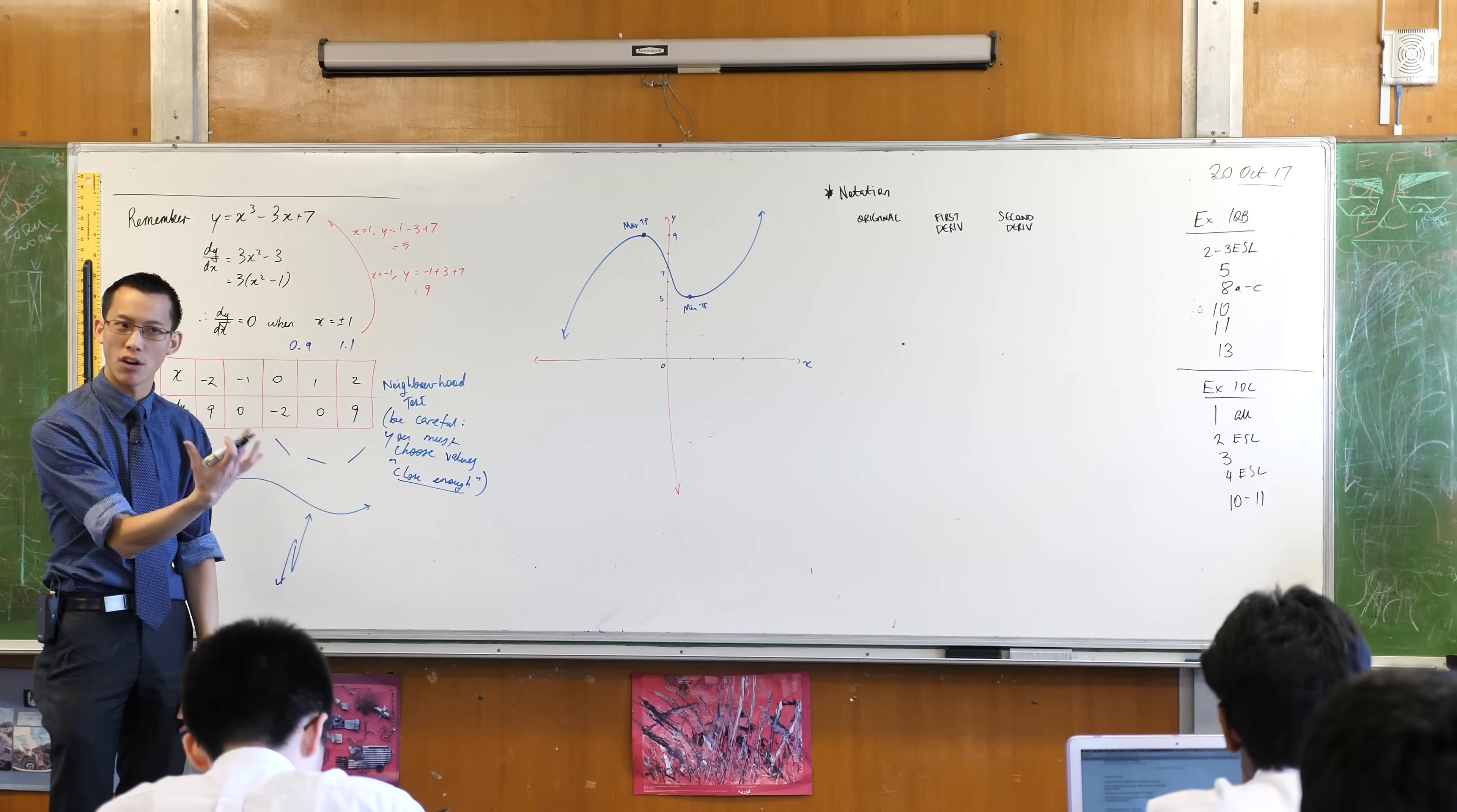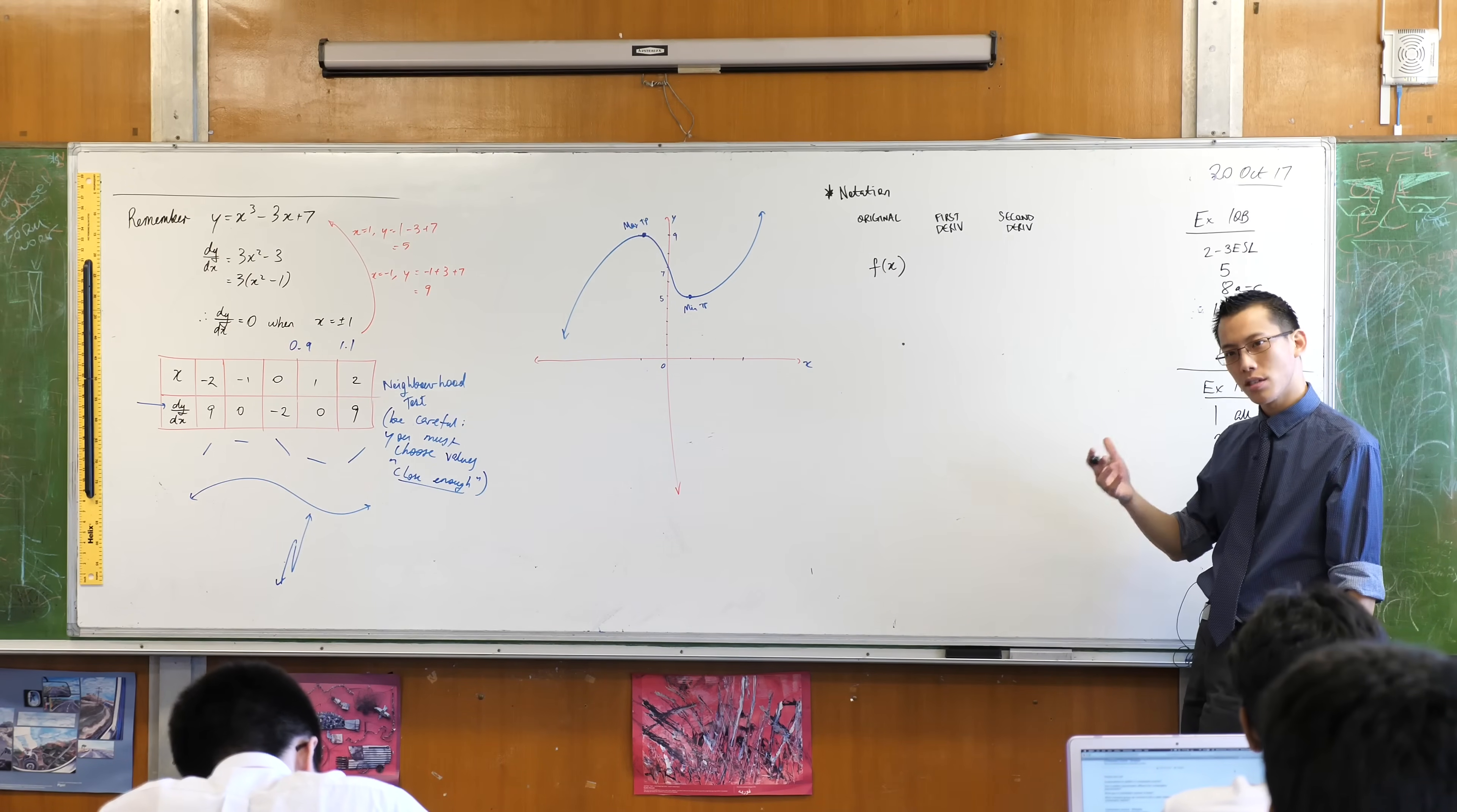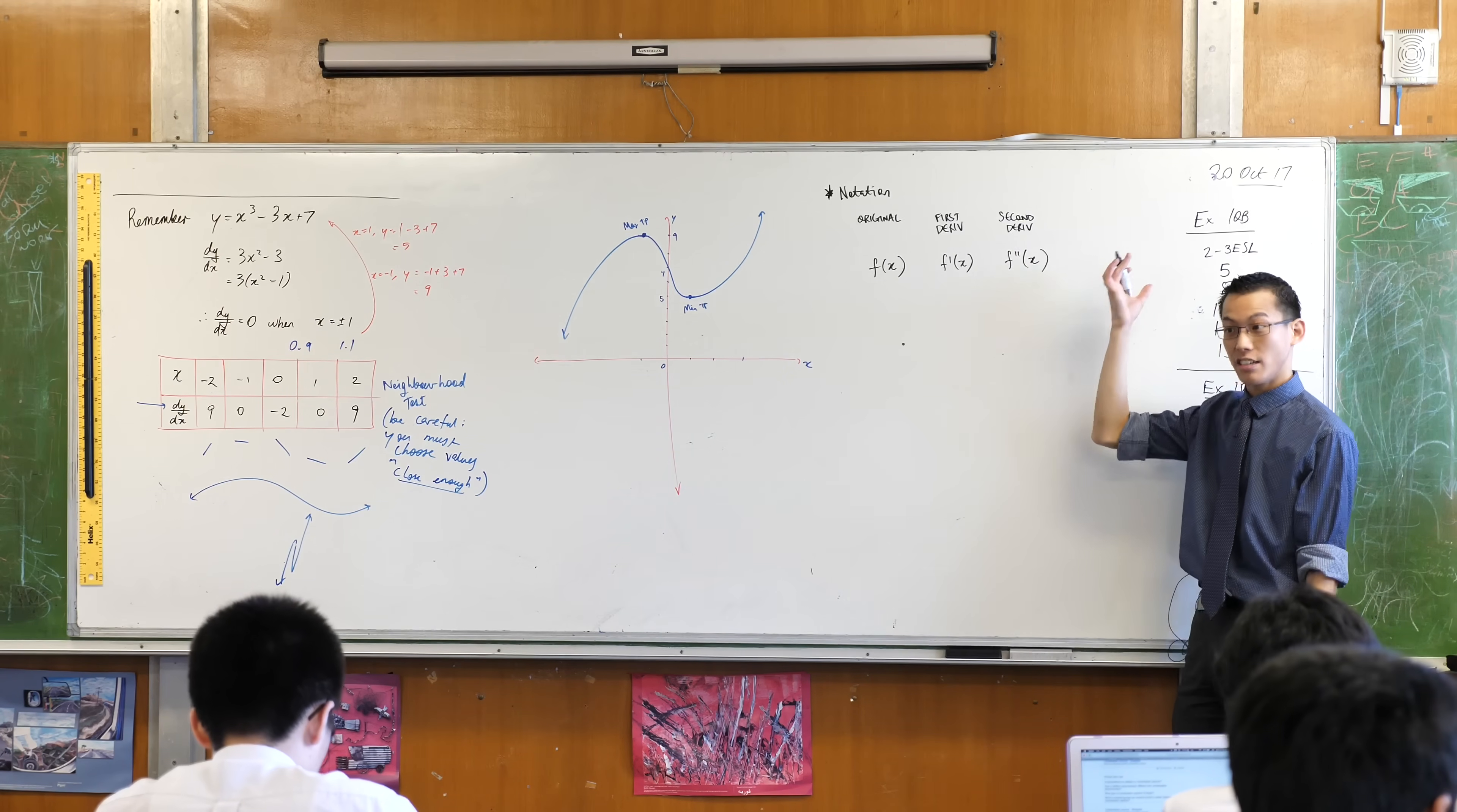Now, based on how you start off your notation, you use slightly different notation to move forward. So for instance, if you think way back to when we did first principles, we talked about function notation. Remember that? f of x. Okay. What symbol do we apply to get your first derivative? A dash. So we call this f dash. So if you were to differentiate again, well you just put another dash. So you can have f double dash, right? That's another way of writing the second derivative.